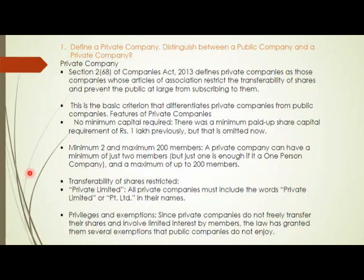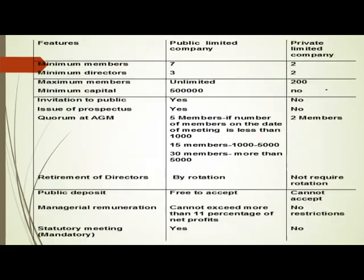When a company is registered as a private one, it has to add 'Private Limited' in its name. The last point is privileges and exemptions — since private companies cannot transfer their shares freely and cannot take subscriptions from the public, they enjoy certain exceptions and privileges. These privileges and exemptions are not applicable in the case of a public company.